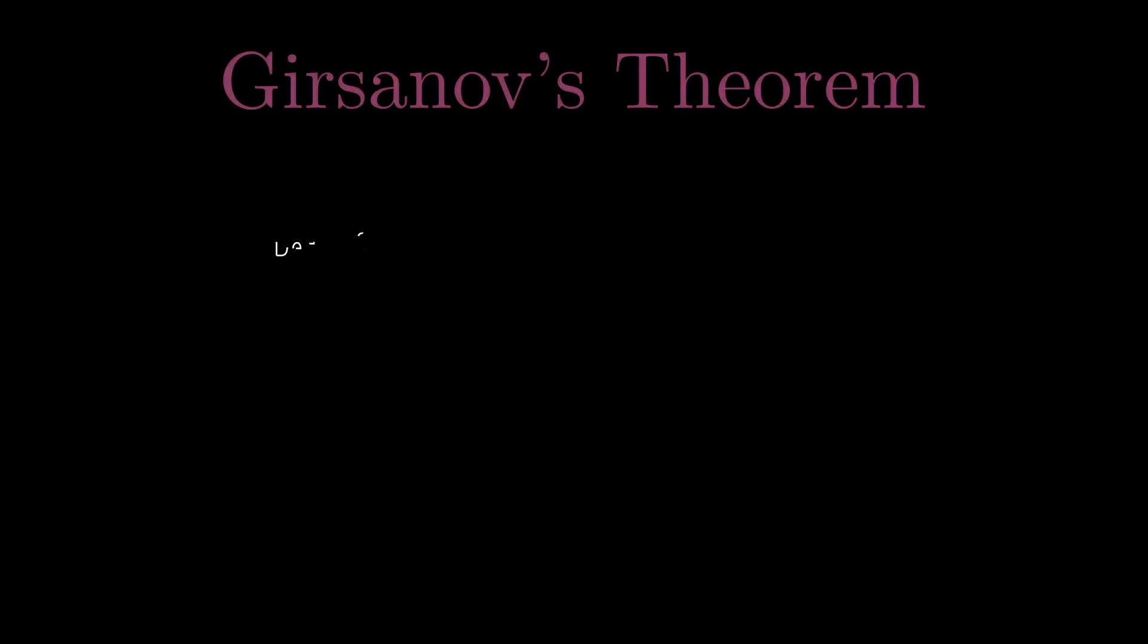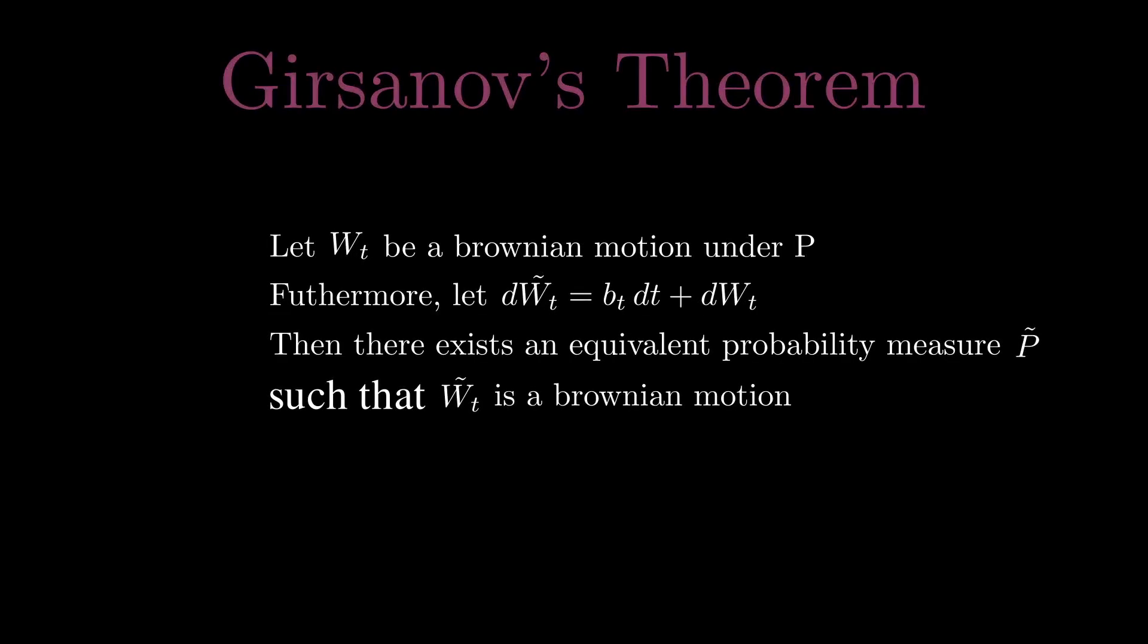Girsanov's theorem is actually a pretty simple statement. It basically says that if you have a Brownian motion with some drift, then that entire process is a Brownian motion under some different probability measure.